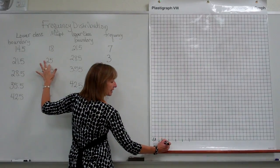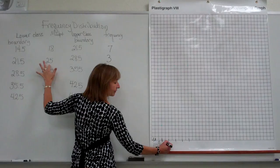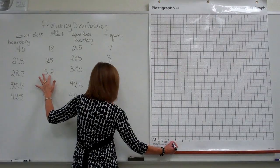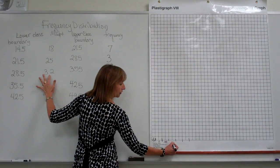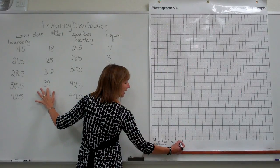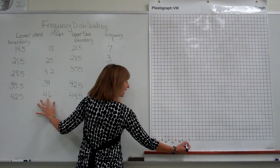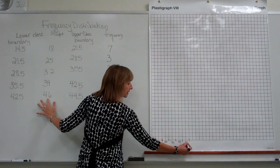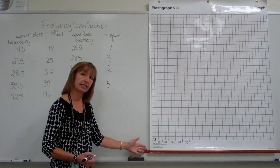The next class midpoint is 25. The third class midpoint is 32. And the fourth class midpoint is 39. And then the fifth class midpoint is 46. So we've just labeled that along the edge.